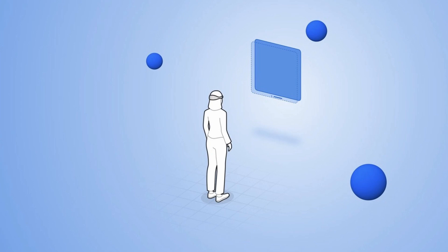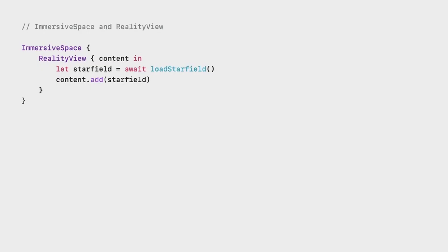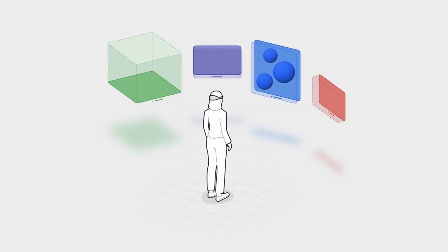Speaking of volumes, this is basically the 3D equivalent to windows. While windows are 2D planes, volumes are 3D dimensional and they are mostly rendering ARKit or RealityKit entities — so 3D objects. Just like windows, these volumes live in the shared space together with other apps on the user's device.